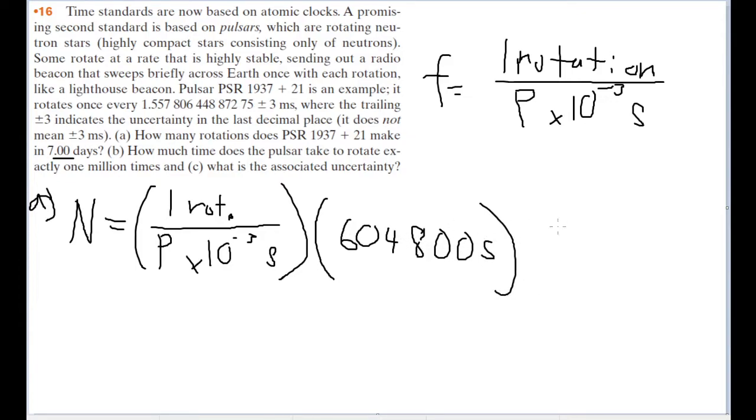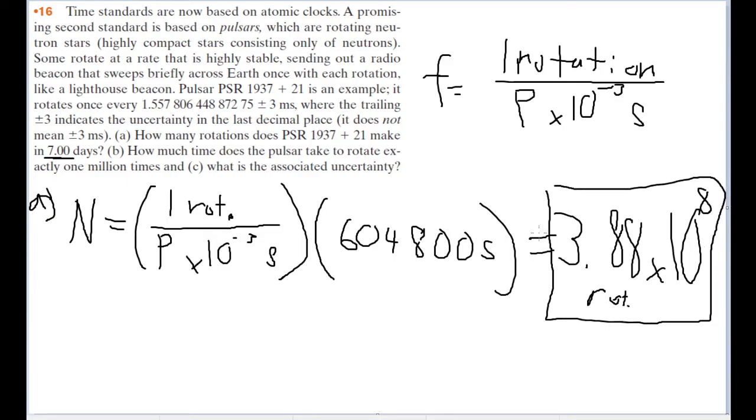And multiplying these two values together and getting our answer, you get a long number that I'm going to round down to 3 significant figures because 7.00 days. And rounded to 3 significant figures, the answer for this problem would be 3.88 times 10 to the 8th power of rotations. Oops, nice handwriting. But that is our answer for part A though.